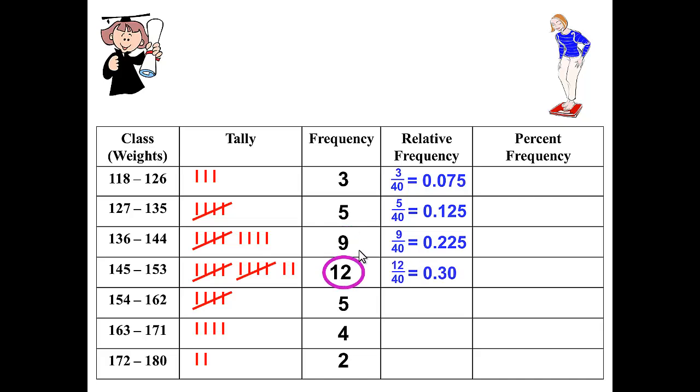12 divided by 40 gives us 0.30, and we added the 0 here for use in just a second. 5 divided by 40, which gives us 0.125. 4 divided by 40, which gives us 0.10. Again, I'm adding the extra 0 at the end for use in just a minute. And then 2 divided by 40, which gives us 0.05. Now that we've got the relative frequency of the last number here, that does complete our relative frequency column.